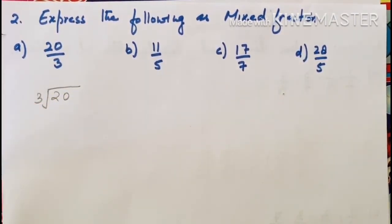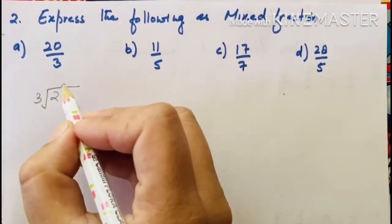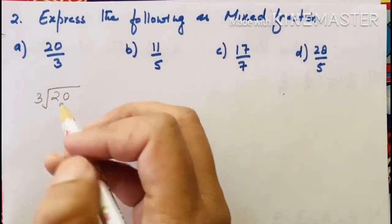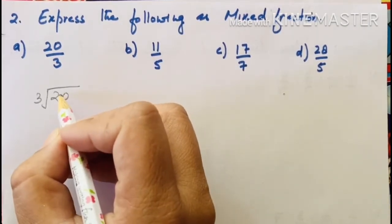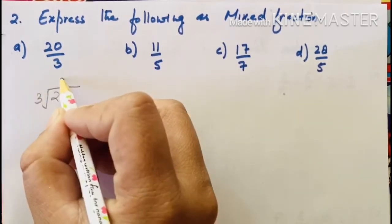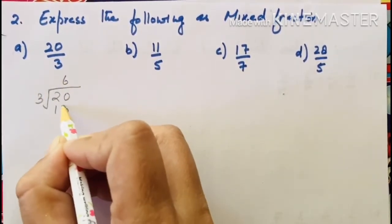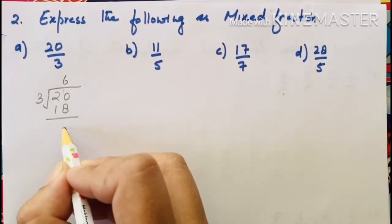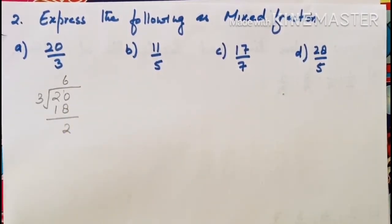Let's see the table of 3. 3, 6 are 18. 3, 7 are 21. 21 is more. 3, 6 are 18. You will get 10, 10 minus 8, 2. You will get 2 as a remainder.